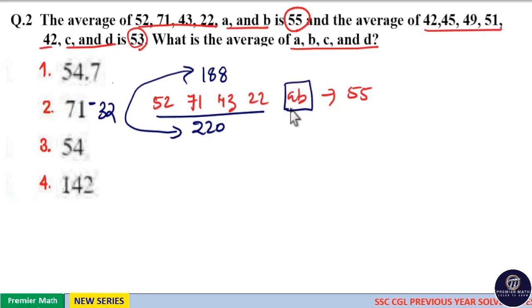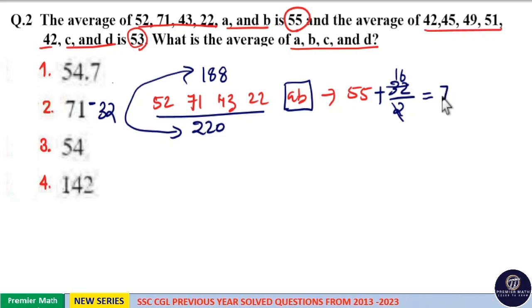So the average of two numbers a and b is equal to 55 plus 32, which should be equally distributed to these two numbers. 2 goes 16 times in 32, so 55 plus 16 is 71. The average of a and b is 71.